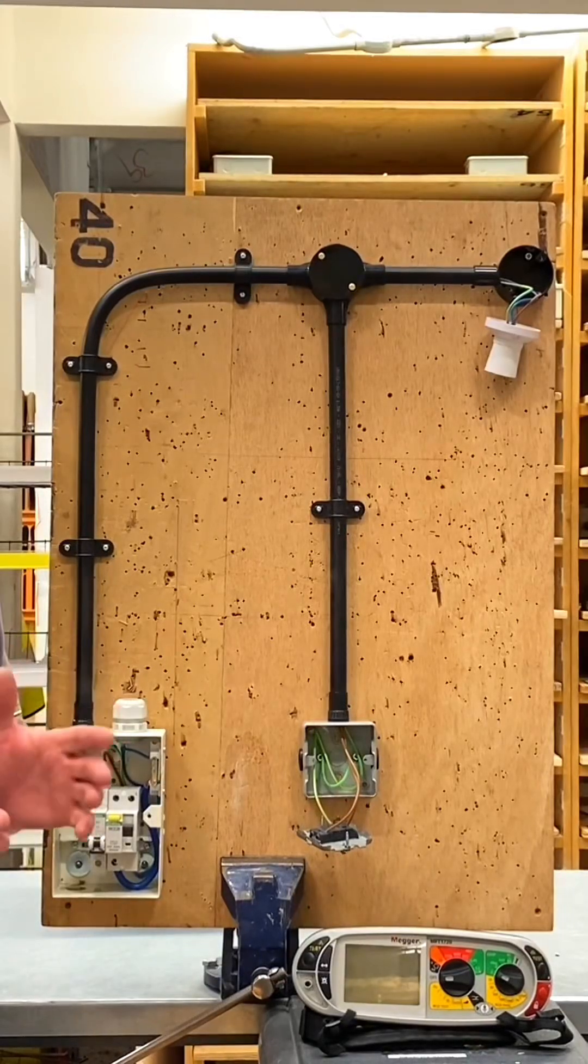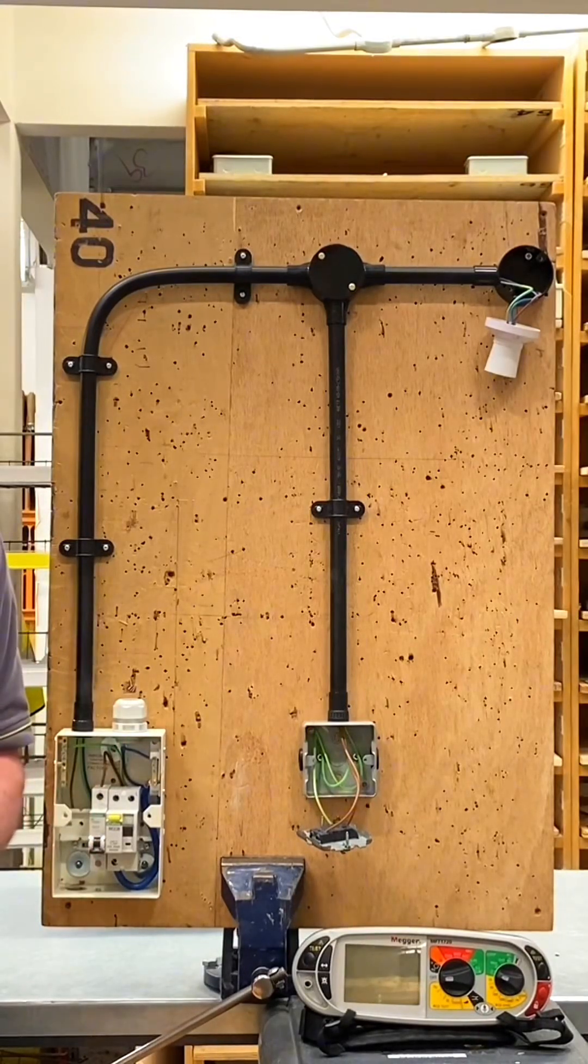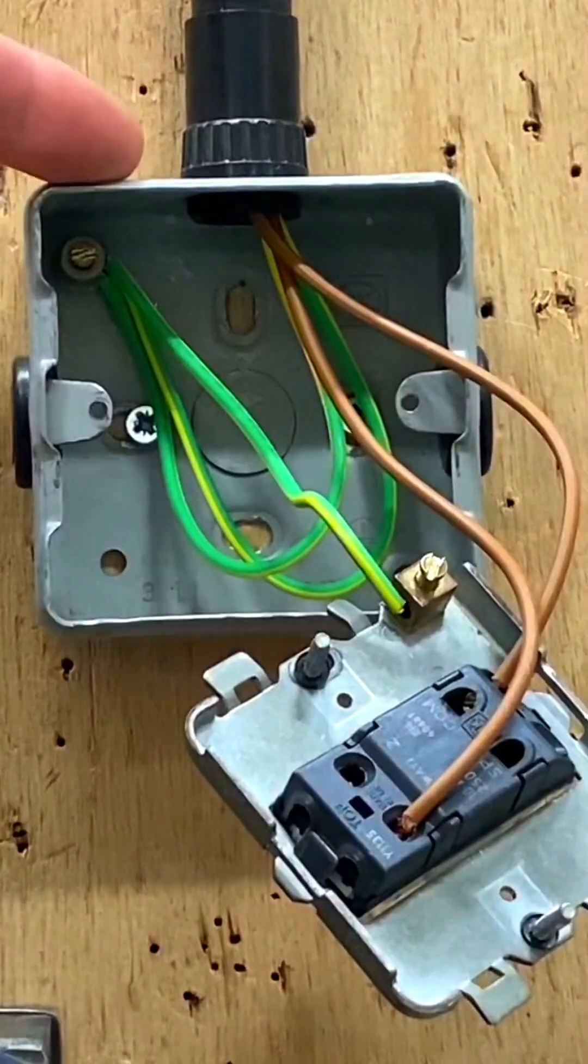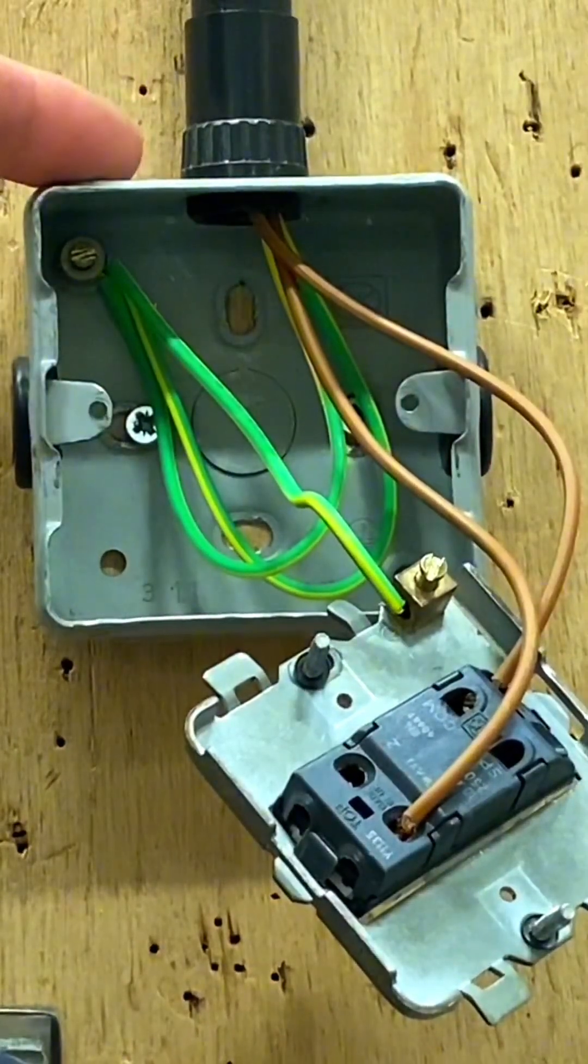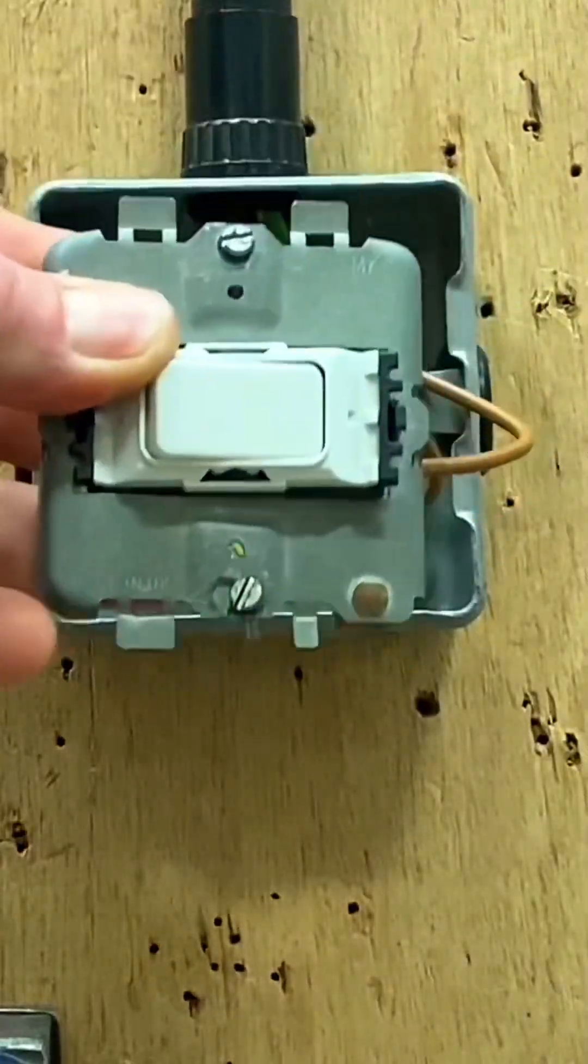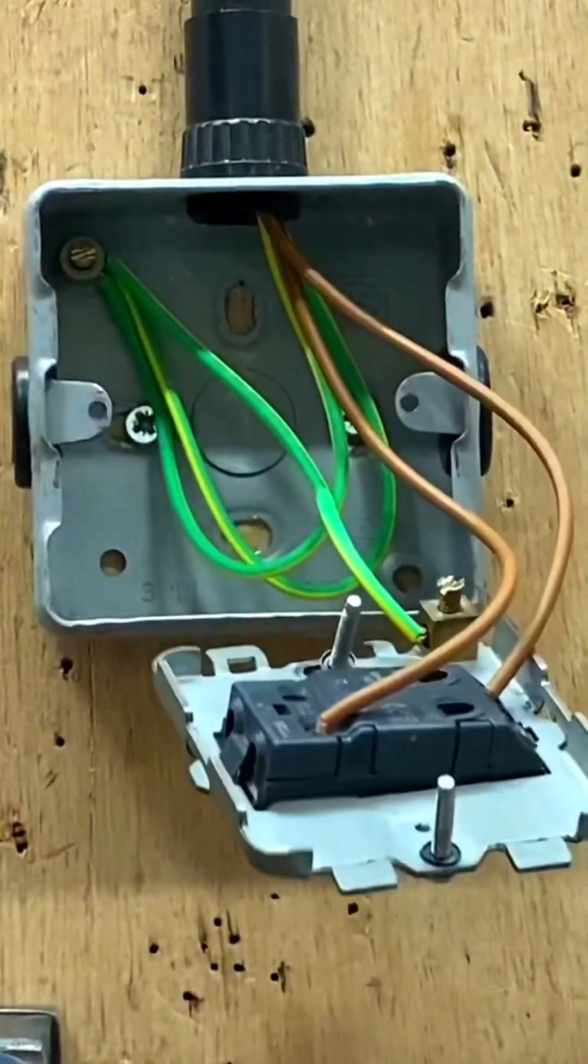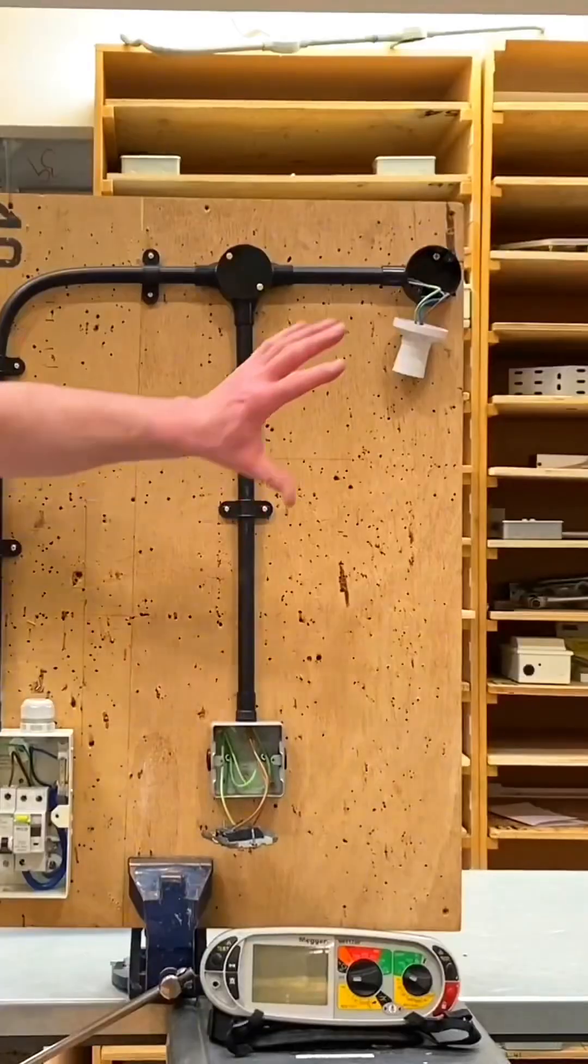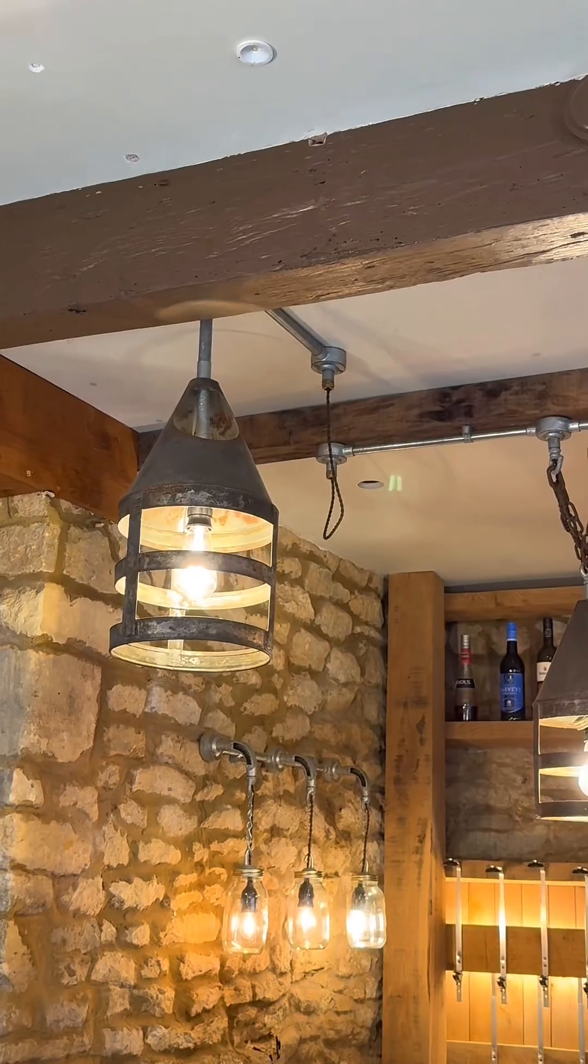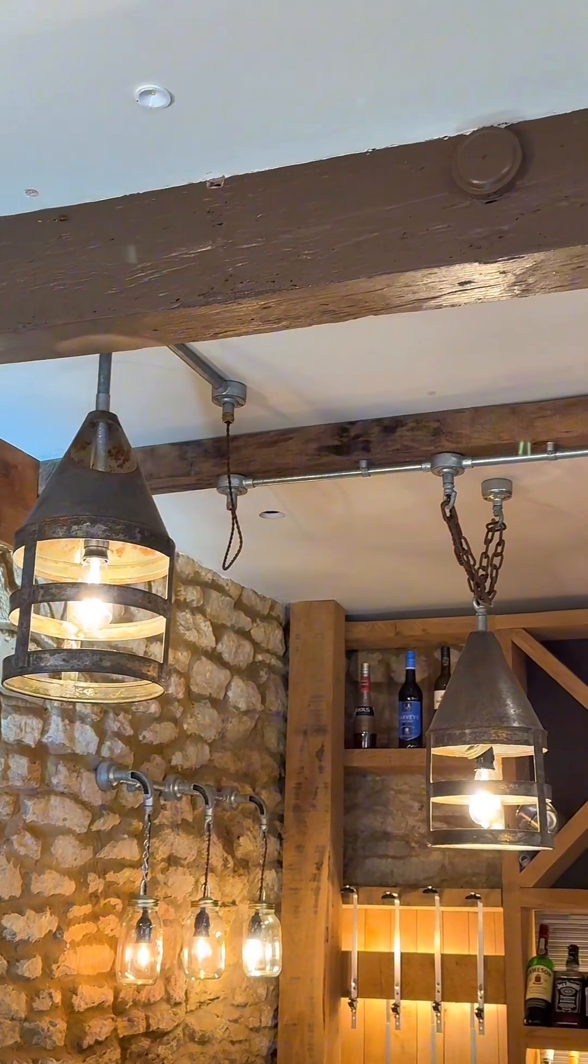We're going to look at the continuity of CPC, polarity, and insulation resistance tests. It's really important that we prove the CPC gets to the exposed conductive part of the box, the frame that holds the switch, the CPC connections within the accessory, and up to the plastic light fitting in case it's changed to a metallic one in the future.